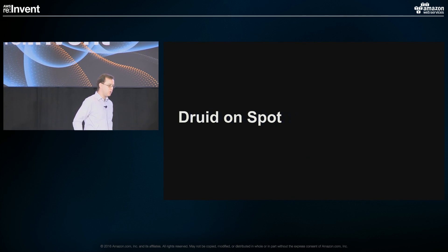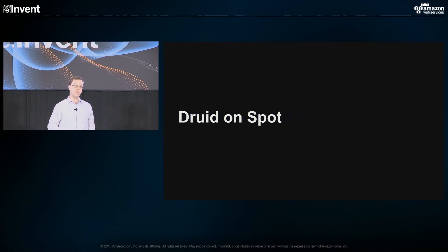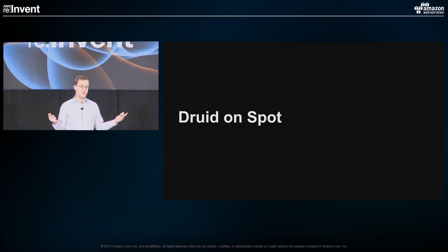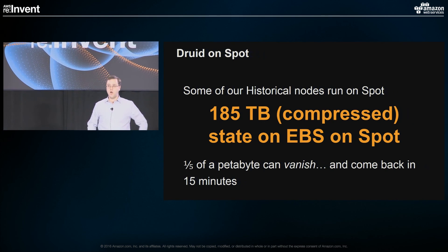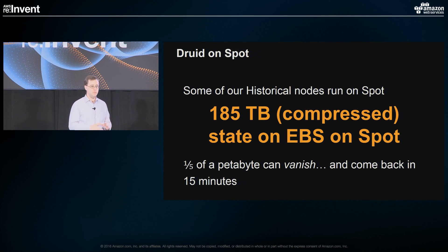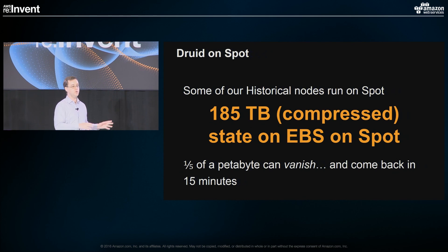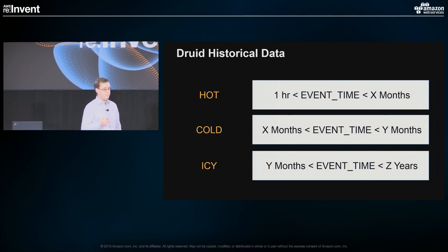Druid on spot. Being a query engine, Druid on spot has a very interesting property — it's built for interactive query processing but also stores a lot of state locally. Instead of having data all over the place, it knows where data is located and executes queries based on where the data is. That state is stored locally per node. Some of our historical nodes run on spot, and we use EBS to do that. We have almost a fifth of a petabyte of EBS dedicated to running these Druid nodes on spot. The cool thing is that we have a fifth of a petabyte of data that can absolutely vanish but then come back in 15 minutes.